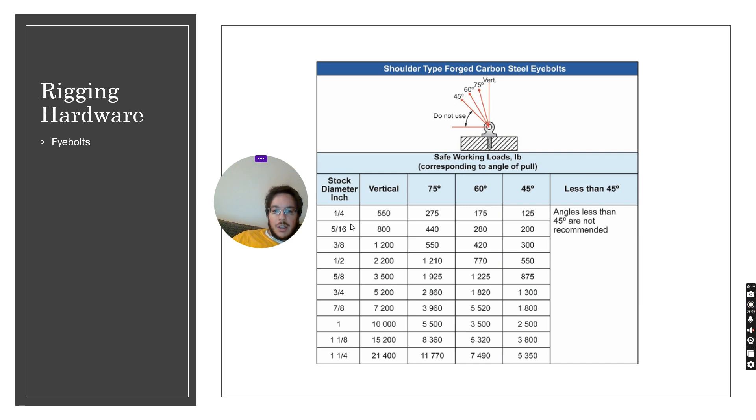If we look here a quarter inch bolt can do 550 pounds straight up but as soon as we get to 60 degrees it can only do 175 pounds.